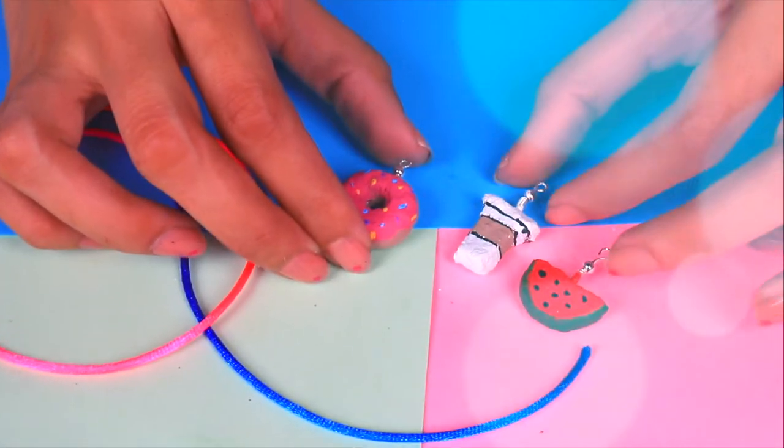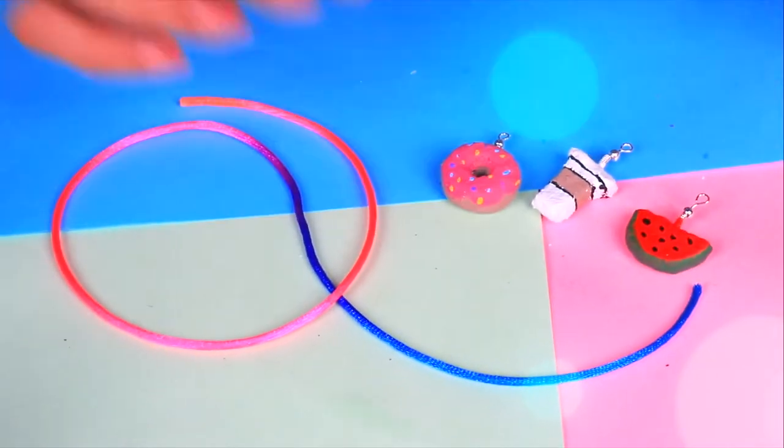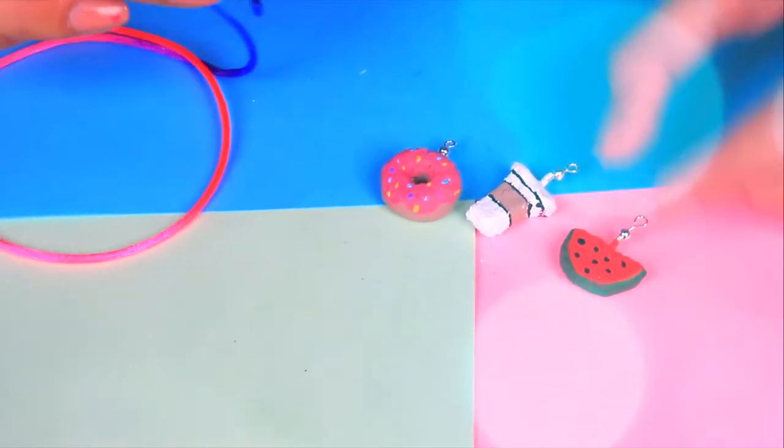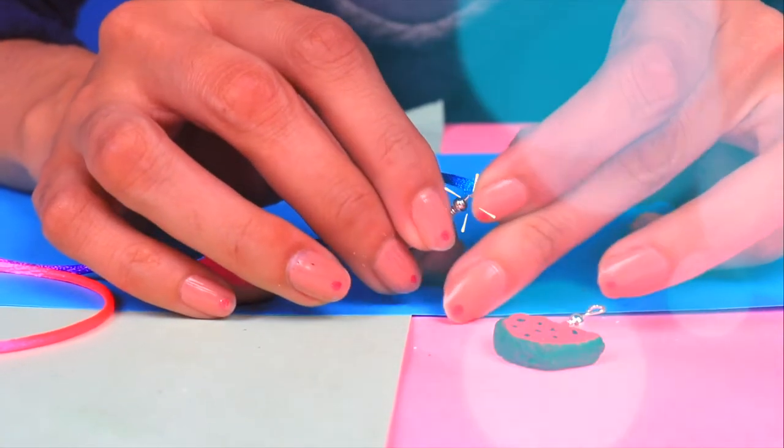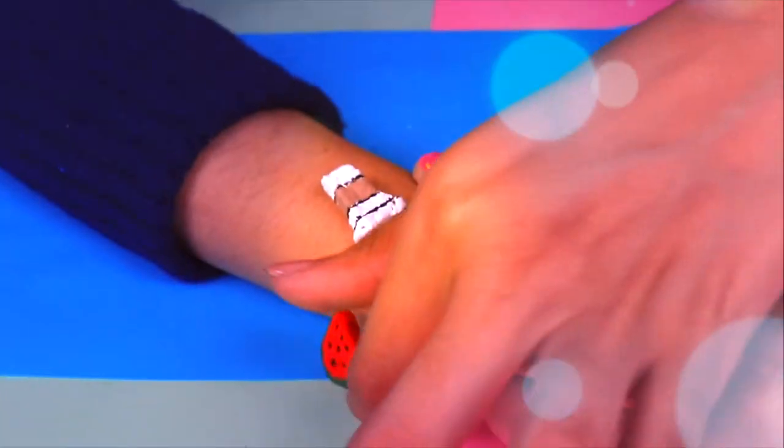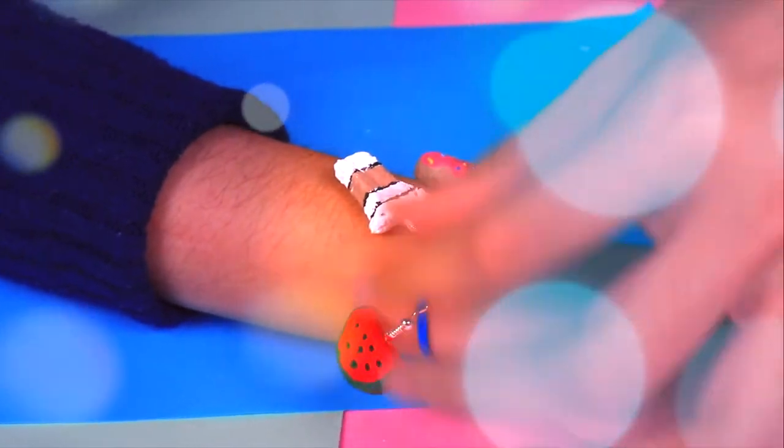We will use this wonderful bicolor thread that I have here to thread up the hooks of our decorations. First the donut. Then we will thread up the second hook and we will do the same with the third one. And look! Our first accessory is ready! It fits my hand perfectly and it's so cool!